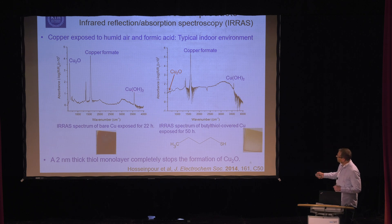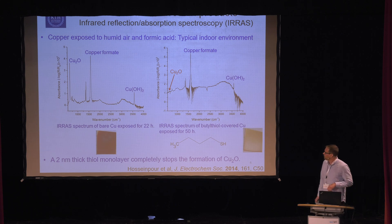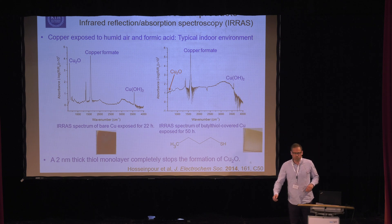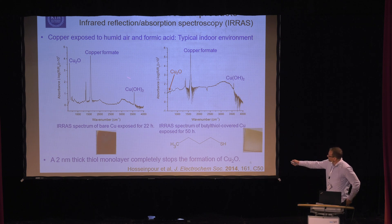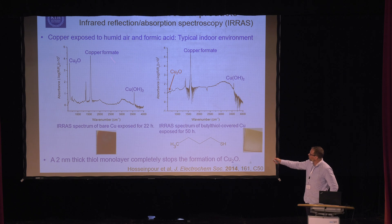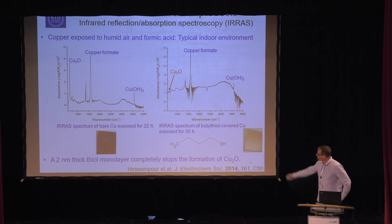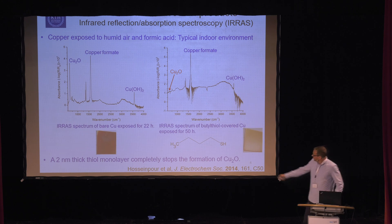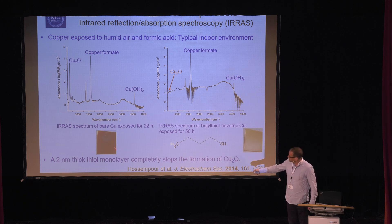In this case we studied copper — we've done a lot of work on copper. We exposed it to humid air and formic acid, which is a model system for typical indoor environments such as this room. This is what it looks like: you form a lot of copper oxide or cuprite, a lot of copper formate, a lot of copper hydroxide, and some embedded water and hydroxides as well. You can see this copper is really corroded.